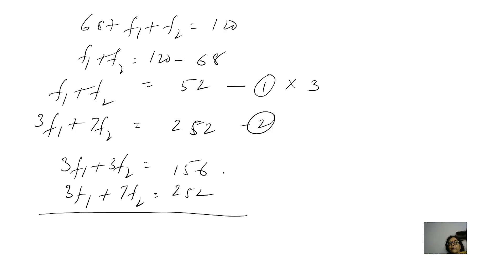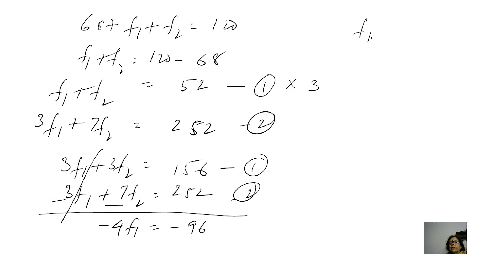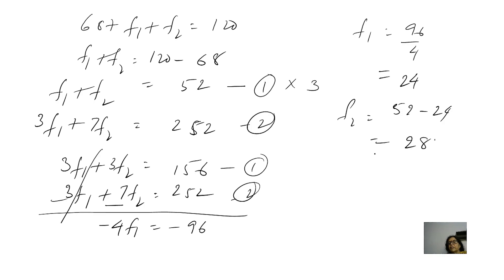Subtracting the first modified equation from the second: (3f1 + 7f2) − (3f1 + 3f2) = 252 − 156, giving 4f2 = 96, so f2 = 24. Then f1 = 52 − 24 = 28. So f1 = 28 and f2 = 24.